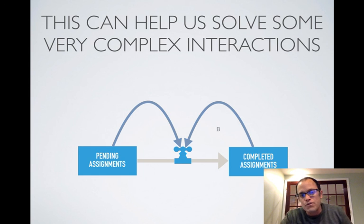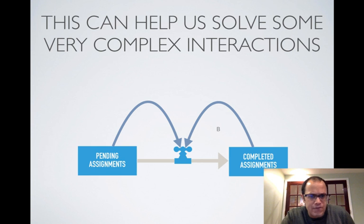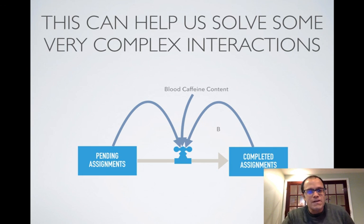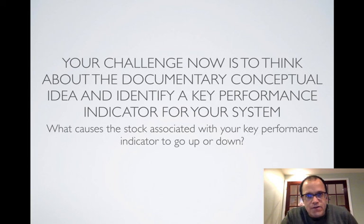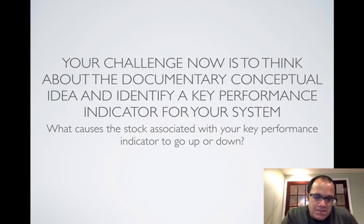These two influences compete against one another. There's not actually a loop on the left-hand side — there's possibly a relationship, but I haven't drawn it because I don't understand it. There are also external factors that might affect the valve — for instance, if I drink a little extra coffee, I can get a little bit more work done and stay more focused. Your challenge now is to think about your documentary's conceptual idea: what would be a key performance indicator for your system? What causes the stock associated with your key performance indicator to go up or down? Ask yourself that and see if you can start thinking about whether you have some reinforcing or balancing loops. Good luck.